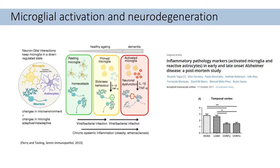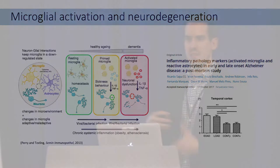Only quite recently, by looking at postmortem human tissue and picking out active microglia based on their morphology, it's been shown there is an increase in active microglia in both early and late onset Alzheimer's disease compared to control brains, whether old or young. So there's a disease-specific process going on.